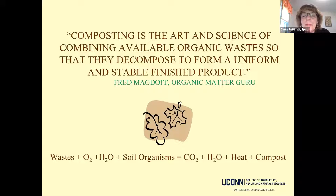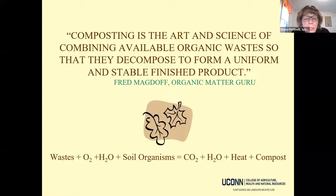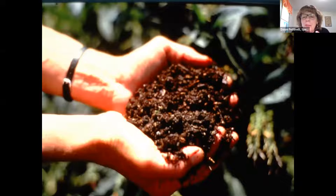There isn't really a strict formula, especially at the backyard scale. You're taking organic waste — food waste, yard waste — and encouraging decomposition to produce a valuable product for gardens and lawns. It's really just chemistry: organic waste plus soil organisms, oxygen, and water produces carbon dioxide, water, heat, and compost. There are as many recipes for compost as there are for zucchini bread, and the final product is always usable.